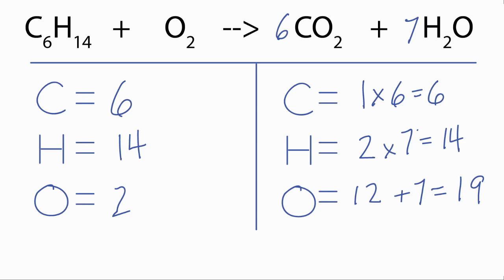The best way to go about this is we have 19 here and two here. Let's multiply this by 19 over two, because that'll give us 19. So we'll put 19 over two up here. And this combustion reaction is balanced.